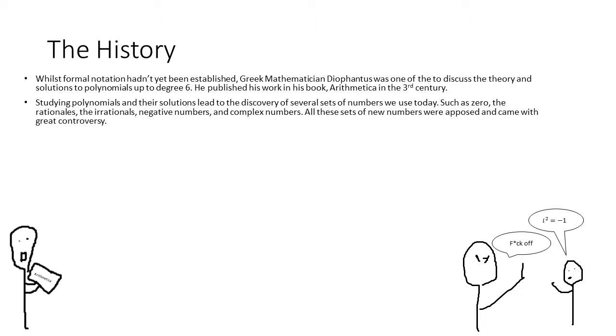Polynomials of 1st and 2nd degree invoked the discovery of different sets of numbers, such as irrational, rational, negative or zero numbers. It wasn't until the 16th century that modern symbolic notation with the use of letters as parameters was developed by Viète.